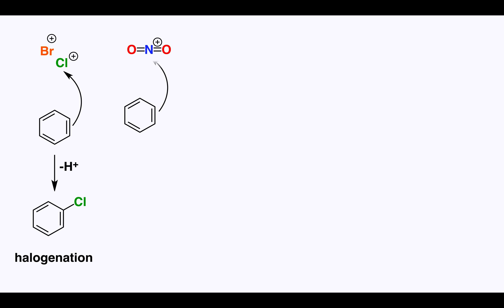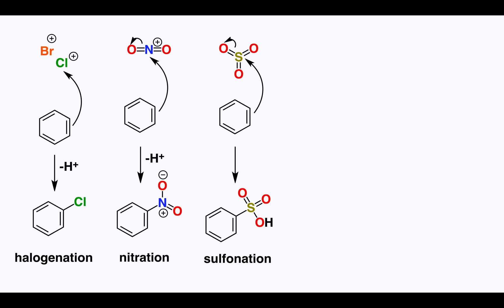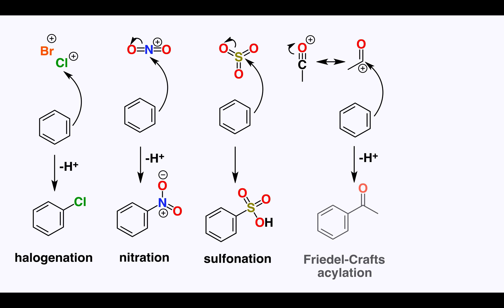The nitronium ion can react with benzene in the nitration reaction, giving a nitro derivative. Sulfonation of benzene can be accomplished using sulfur trioxide in a solution of sulfuric acid. The acylium ion, shown here, can also be attacked by benzene — this ion has resonance with a carbocation that makes it more obvious how benzene will attack.